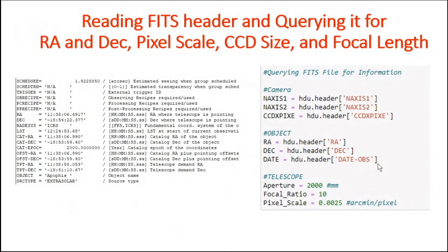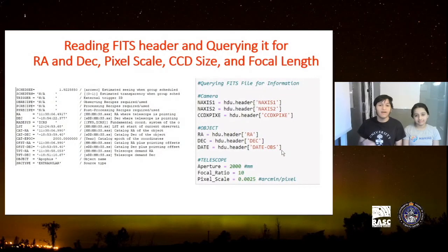Third step: I needed more information about the image. The FITS file, as explained before, is not like JPEG — it also stores a header with useful information. There were four things I used Python to extract from the FITS header: first, the right ascension and declination of the center point of my image; second, the pixel scale — the size of each pixel in degrees. For example, if the camera was taking a 10 by 10 degree image with 100 by 100 pixels, each pixel would be one-tenth of a degree. Third, the CCD size — the number of pixels in the image. And finally, the focal length of the telescope.